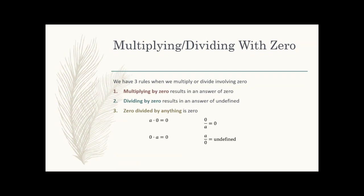Second rule: when dividing by zero — meaning zero is after the division symbol or in the denominator of a fraction — we can't do that. This is called undefined. Your answer would be written as the word 'undefined.' Undefined means our definition doesn't make clear what the answer is. If you do this on your calculator, like 1 divided by 0, your calculator will say error. But you don't write down 'error' — you write the word 'undefined.'